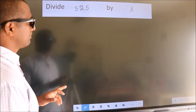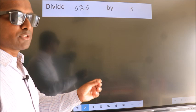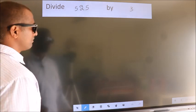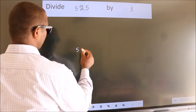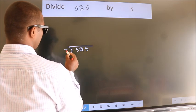Divide 525 by 3. To do this division, we should frame it in this way. 525 here, 3 here.